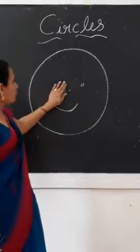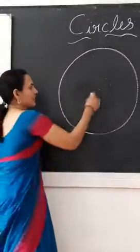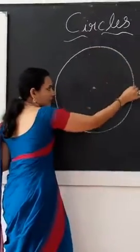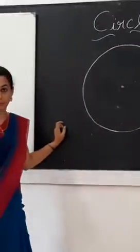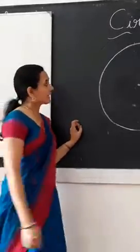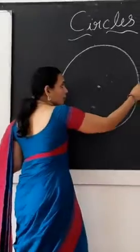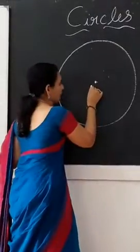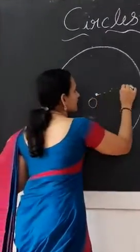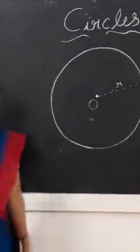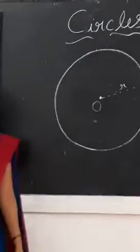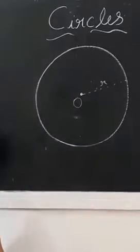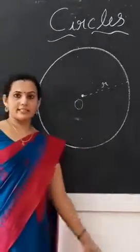Let us recall the definition of a circle. A circle is made up of infinitely many points. We can define a circle as a collection of infinite number of points on a plane which is at a constant distance from a fixed point. This fixed point is called the center and the constant distance is called the radius. Last year we learnt several terms like chord, sector, segment, etc.